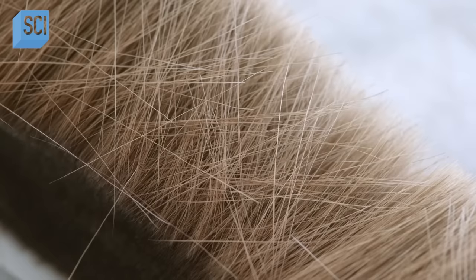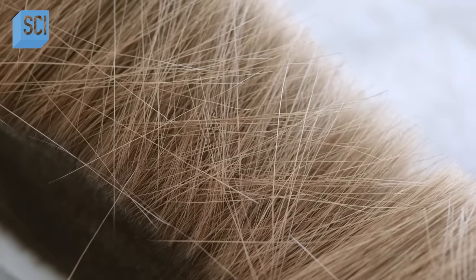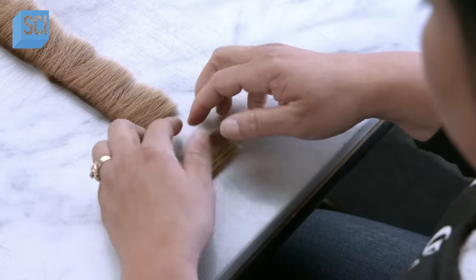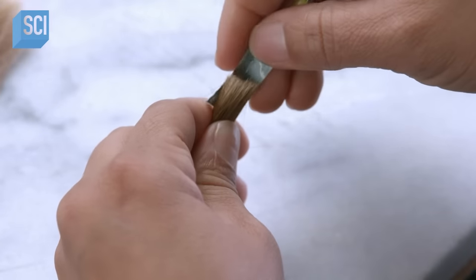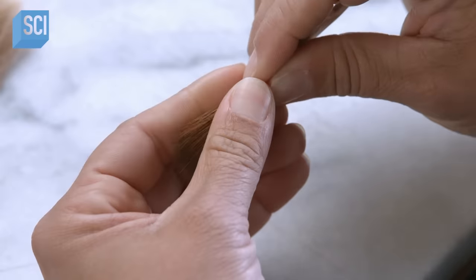An experienced headmaker performs the initial steps of making the head of the paintbrush. She unrolls and straightens out a bundle of red sable, then separates enough hairs for one brush of this size.